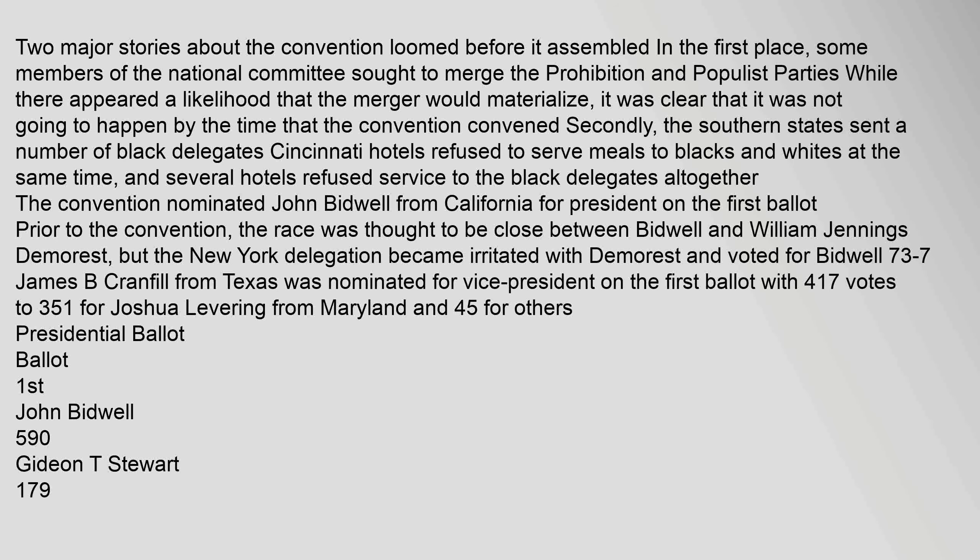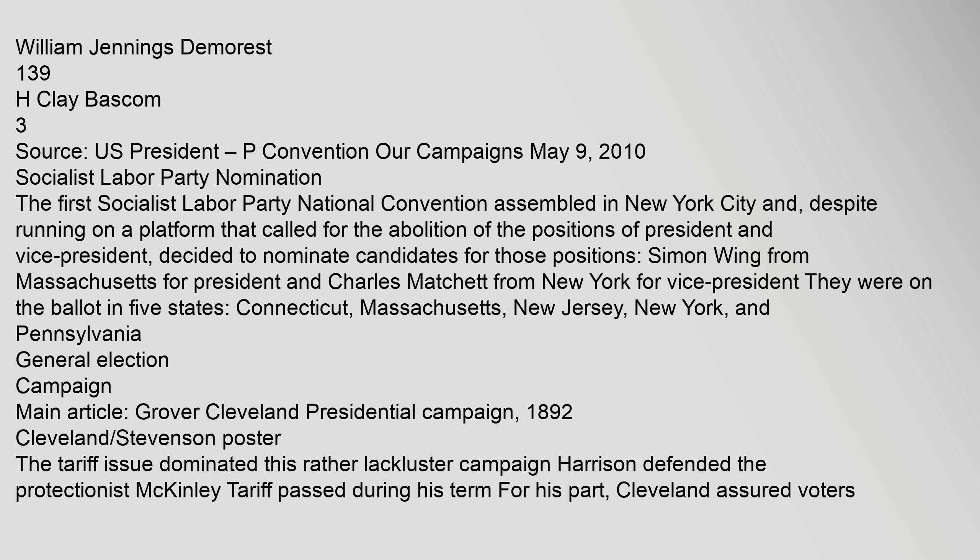Prior to the convention, the race was thought to be close between Bidwell and William Jennings Demarest, but the New York delegation became irritated with Demarest and voted for Bidwell 73–7. James B. Cranfield from Texas was nominated for vice president on the first ballot with 417 votes to 351 for Joshua Levering from Maryland. The first Socialist Labor Party national convention assembled in New York City and, despite running on a platform calling for the abolition of the positions of president and vice president, decided to nominate candidates for those positions: Simon Wing from Massachusetts for president and Charles Matchett from New York for vice president.